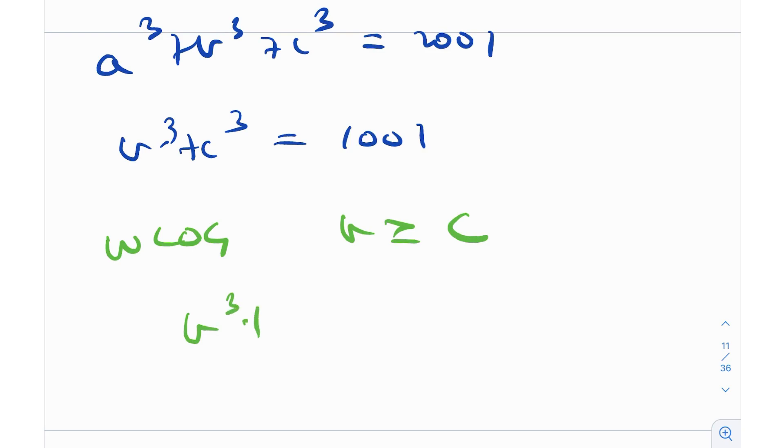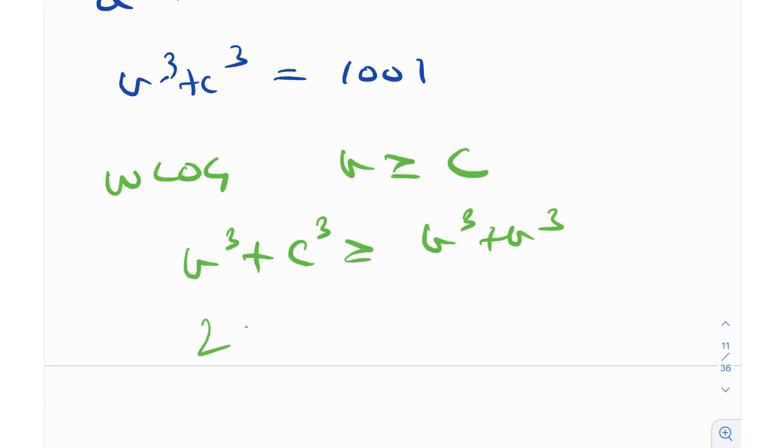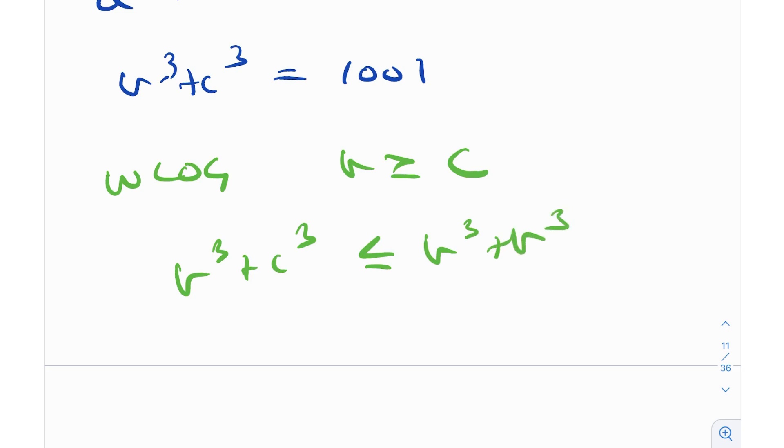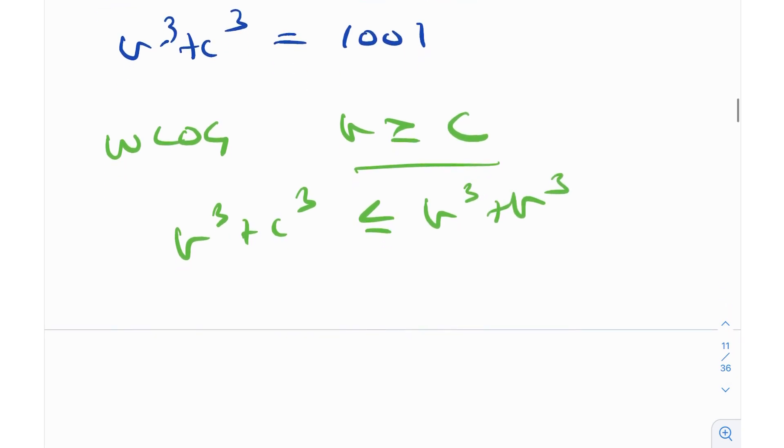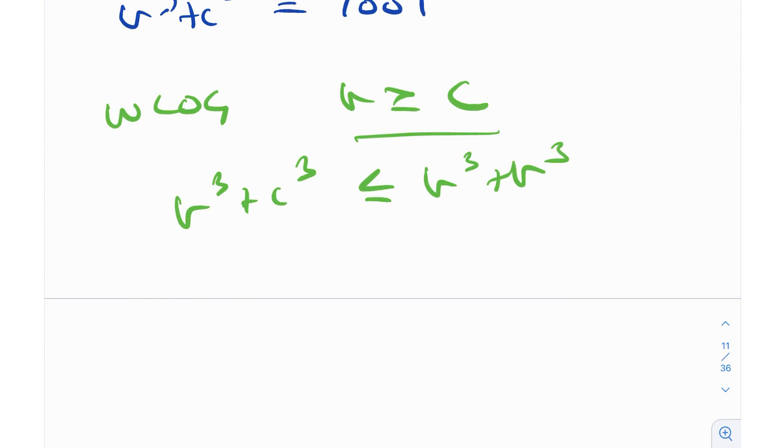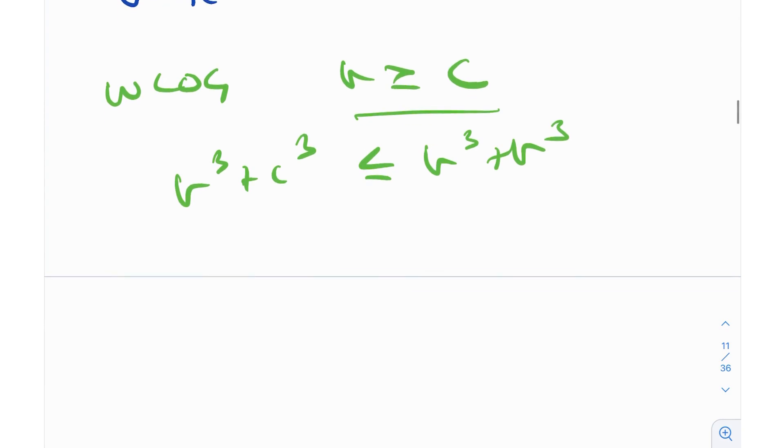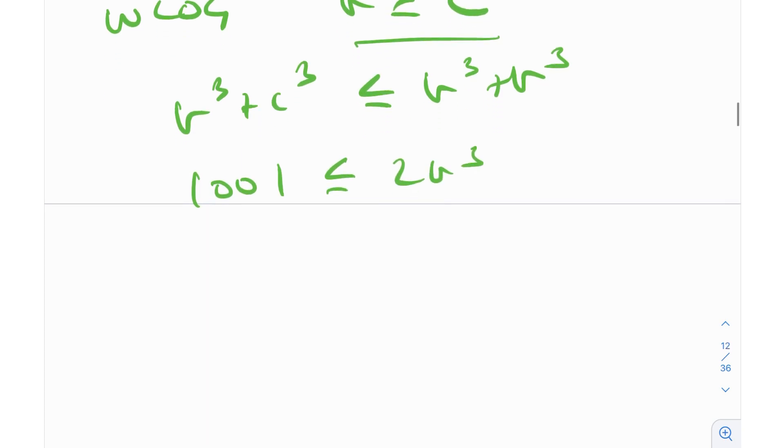Similarly, B³ + C³ is less than or equal to B³ + B³, because B ≥ C. So 1001 ≤ 2B³. In other words, 2B³ ≥ 1001. So this gives, in a way, a minimum value of B.